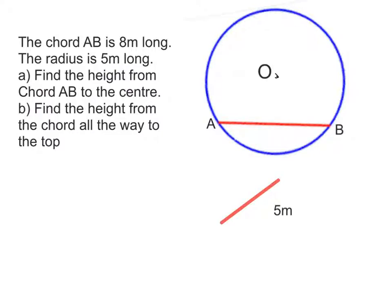Second example. The chord AB is 8 meters long. The radius is 5 meters long. Find the height from AB to the center and then find the height from the chord all the way to the top.